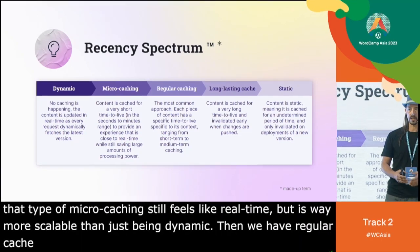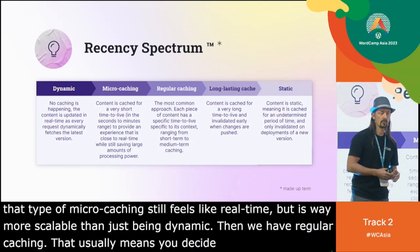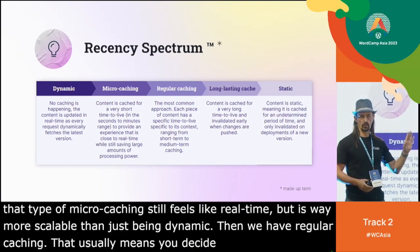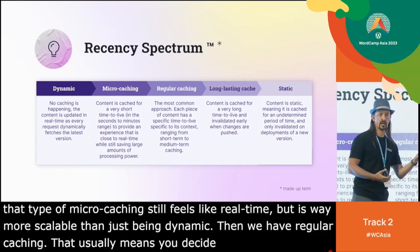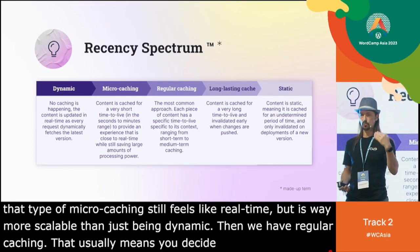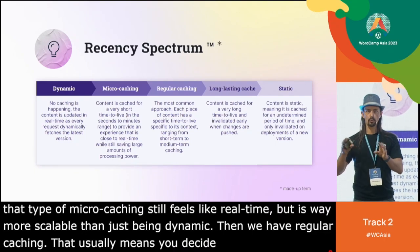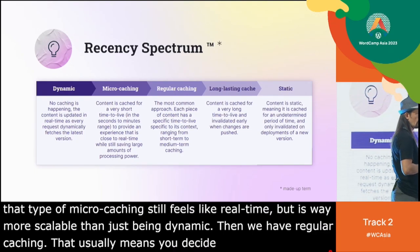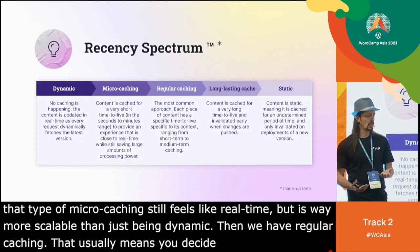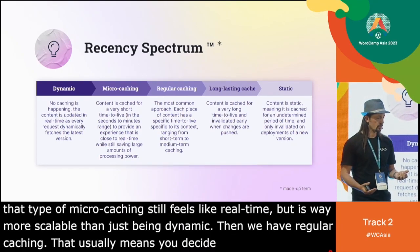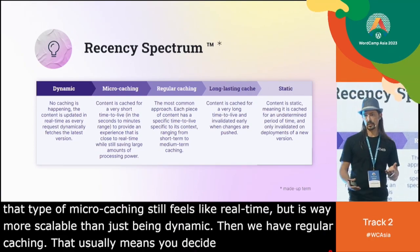Adding micro-caching still feels like real-time but is way more scalable than pure dynamic. Then we have regular caching, where you decide which parts of your site should have which time to live — cached for 30 minutes, cached for two days, and so on. Every time something cached expires, it gets regenerated. This saves even more server resources, but it's not real-time anymore. If one part is cached for a week, you won't get updates for a week.